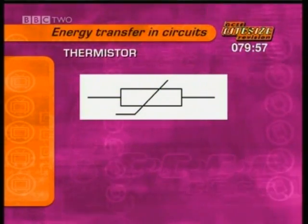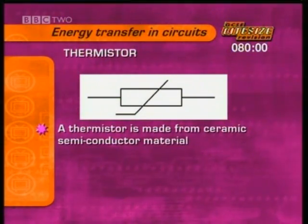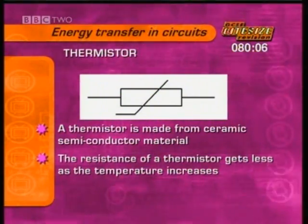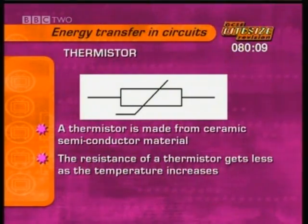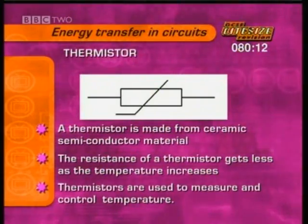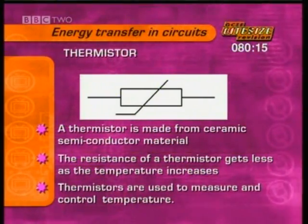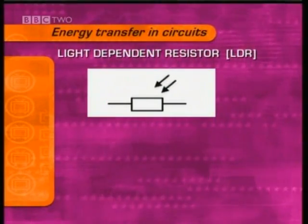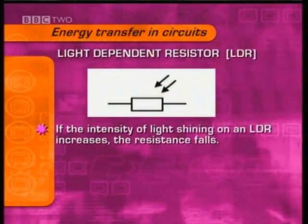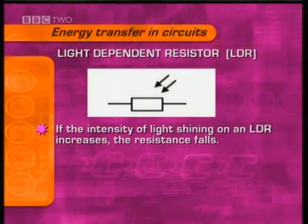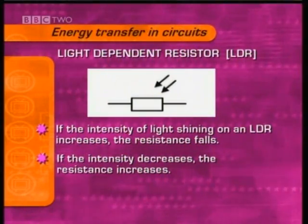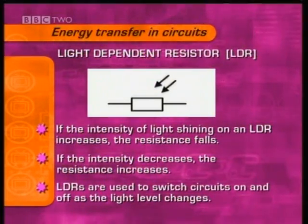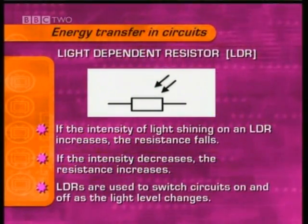A thermistor is another non-ohmic conductor. Thermistors are made of ceramic semiconductor material, not metal. Unlike a normal resistor, the resistance of a thermistor is lower at higher temperatures. Thermistors are used to measure and control temperature, for example in a thermostat. A light-dependent resistor, or LDR, behaves in a similar way — if the intensity of light shining on an LDR increases, the resistance falls, and if the intensity decreases, the resistance increases. LDRs are used to switch circuits on and off automatically as the ambient light level changes, like in street lights.